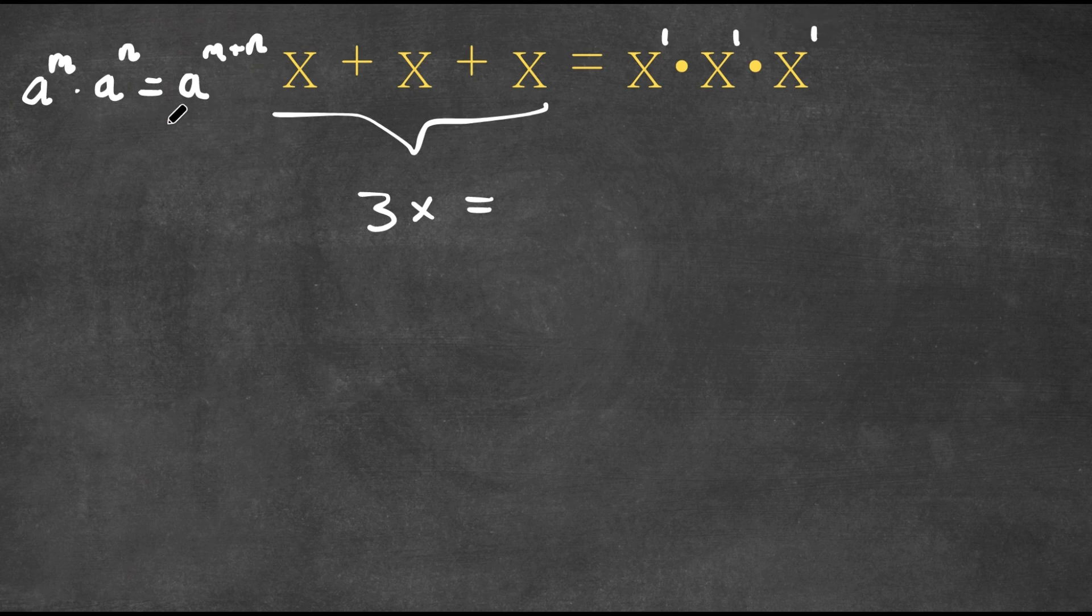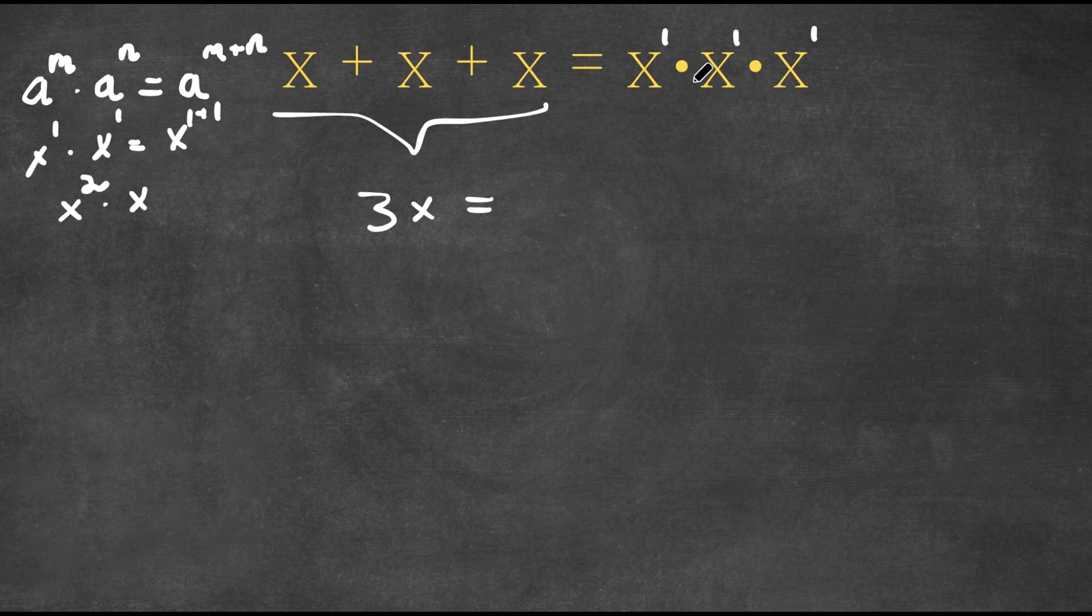So meaning x to the power of 1 times x to the power of 1, this would equal x to the power of 1 plus 1, and 1 plus 1 is 2. So we have x squared. Now x squared times x to the power of 1 again, because we got to multiply with the other x, this would equal to x to the power of 2 plus 1, which is x cubed.